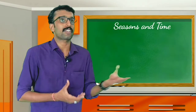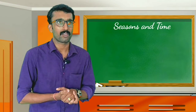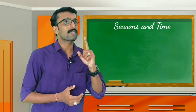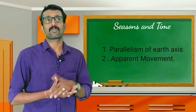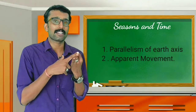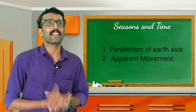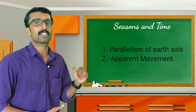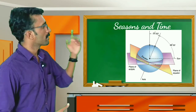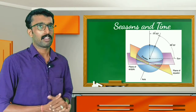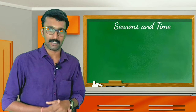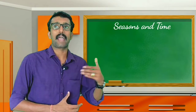We need to learn how these variations are happening. To get that answer, we need to learn two more topics. One is the parallelism of the Earth's axis. The parallelism of Earth's axis means the axis of Earth is tilted 23 and a half degrees from the vertical plane and 66 and a half degrees from the orbital plane. This tilt is known as the parallelism of the Earth's axis.